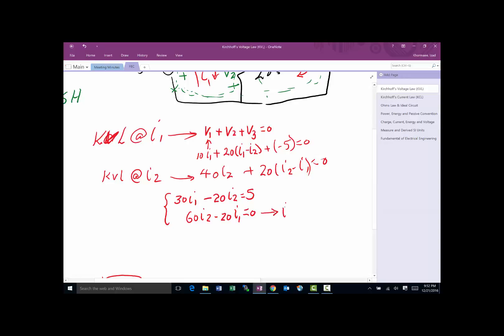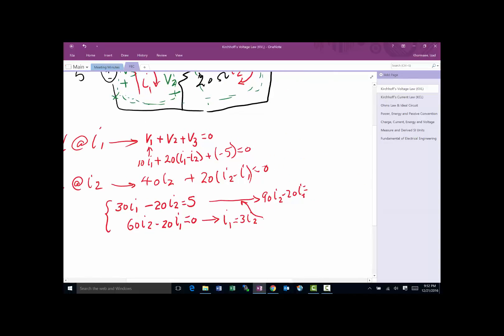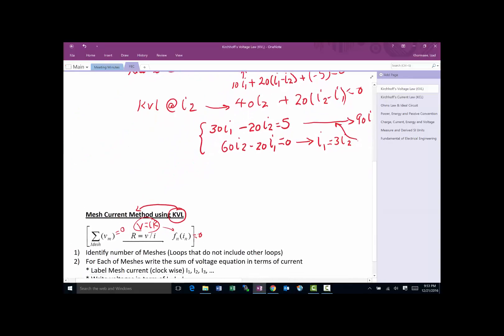I'm going to manually do it just so we've seen once how to do that. I1 equals 3 I2. I can plug that into the equation above, which allows me to write 90 I2 minus 20 I2 equals 5, which means I2 equals 5 divided by 70 amps. Once I have that, then I1 is 3 times I2, which equals 15 over 70. We solved it—we got the answer.